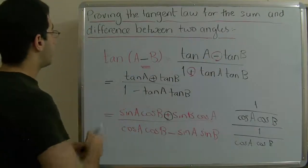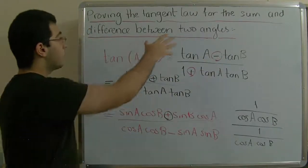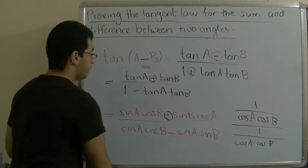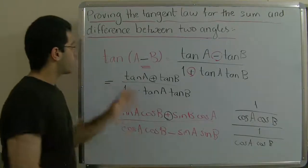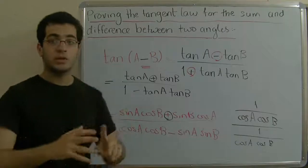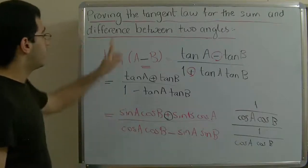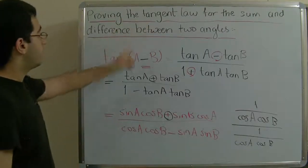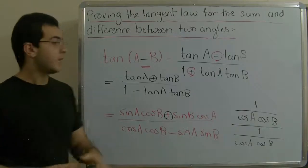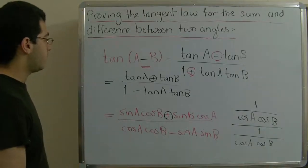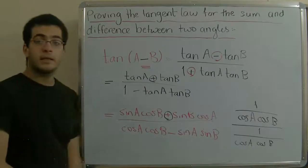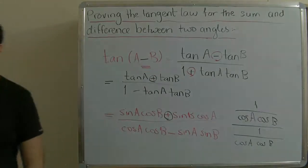And this is the proof of the tangent law for the sum and the difference between two angles. Now we know how to prove the sine, cosine, and tangent laws for the sum and difference between two angles. Next time there will be applications and examples to show this further. Thank you for watching and see you next time.